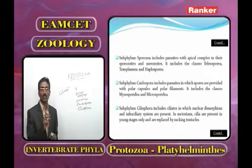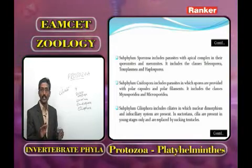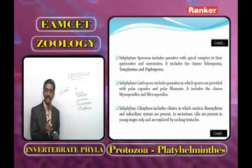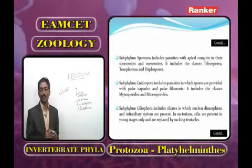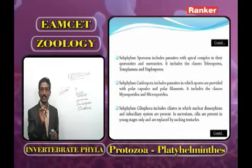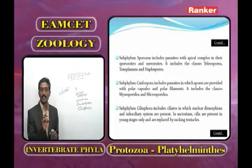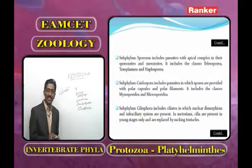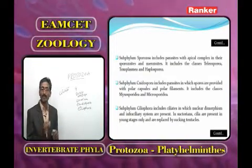In Ciliophora there is a macronucleus and a micronucleus. The macronucleus controls all vegetative functions except reproduction; if damaged, the animal dies immediately. The micronucleus is reproductive in function and is diploid. If the micronucleus is damaged in ciliates, reproduction will be impaired.